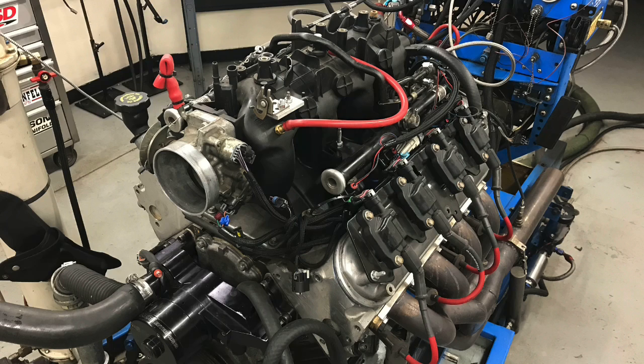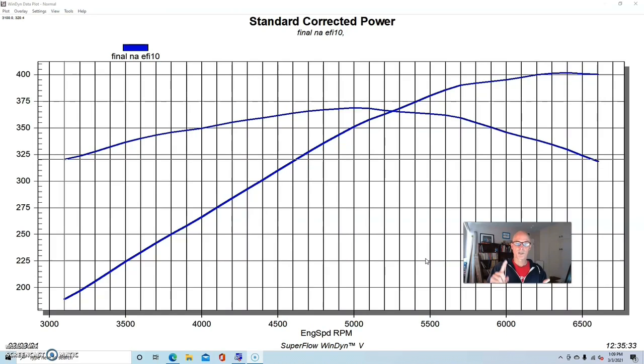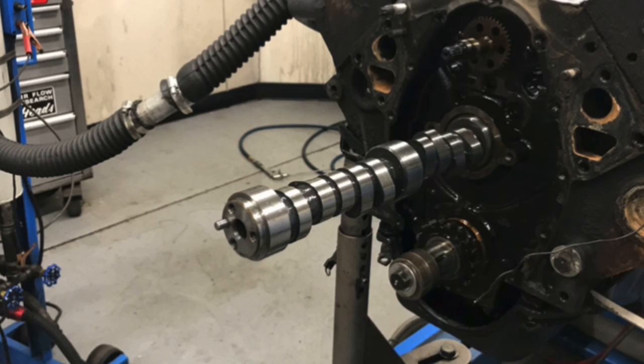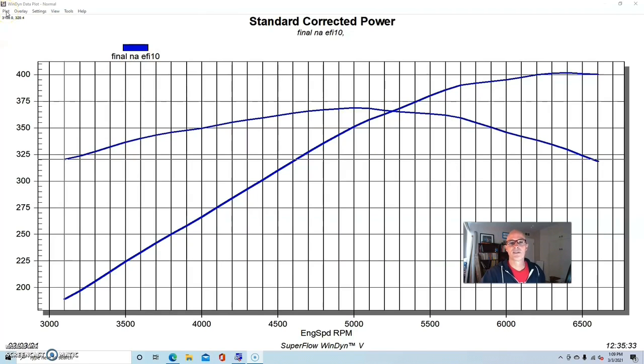So we ran our 4.8 liter, naturally aspirated, and it was equipped with a stock block, stock crank, Gen 4 rods, JE forged small dome piston. So it had about 10 to 1 compression. It had a JFR cam in it. It was 595 lift, 224, 228 degree duration and 112 degree lobe separation angle.